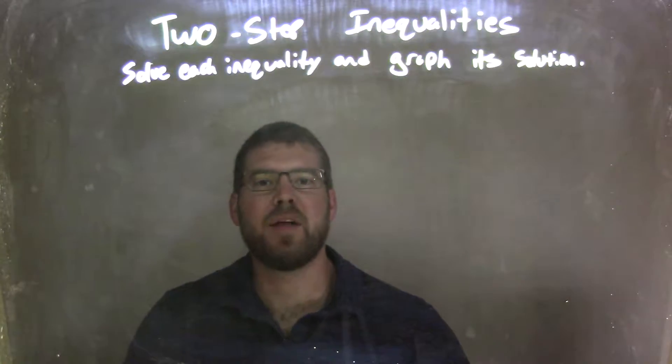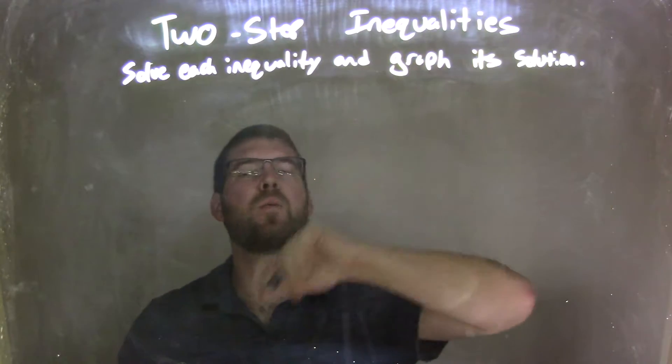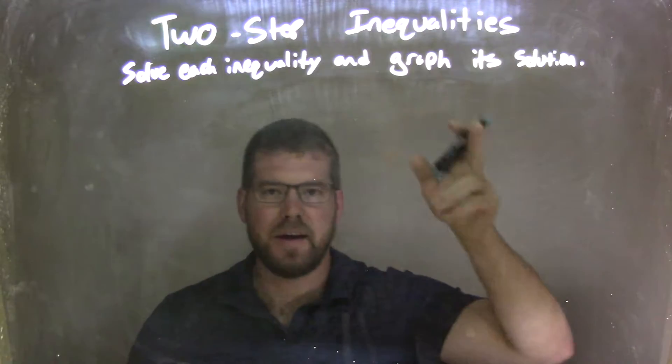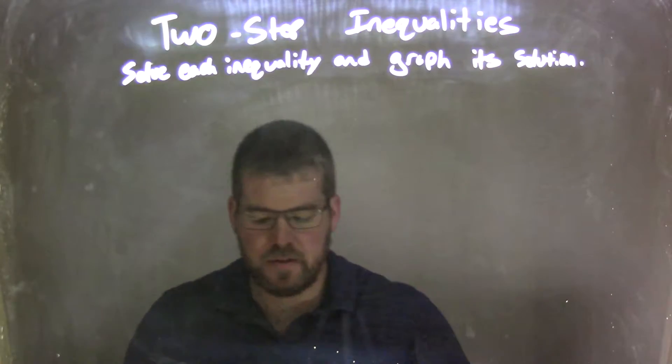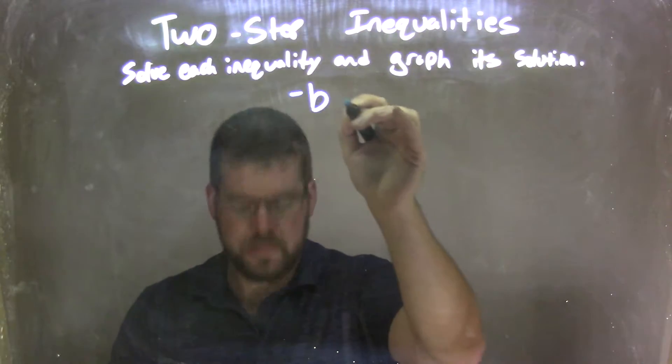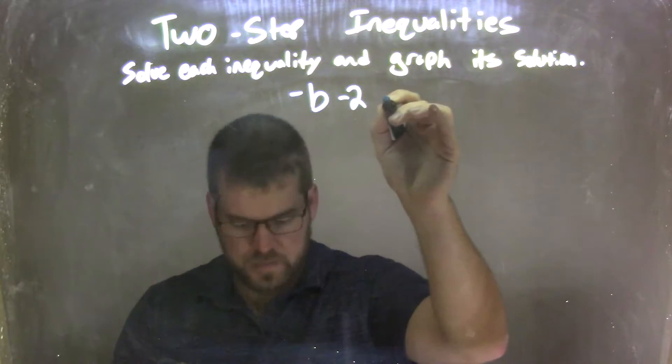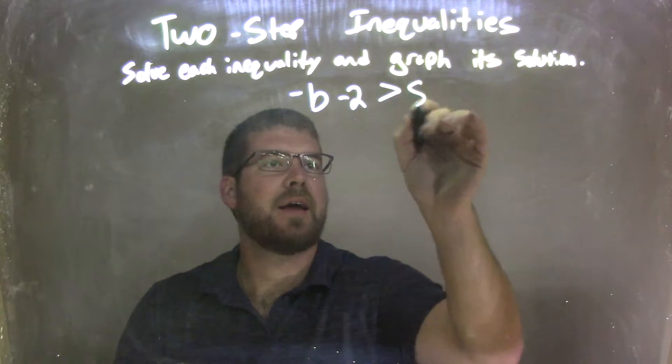Hi, I'm Sean Gannon, and this is MinuteMath. Today we're going to learn about two-step inequalities, and we're going to solve each inequality and graph its solution. So if I was given this inequality: negative b minus 2 is greater than 8.